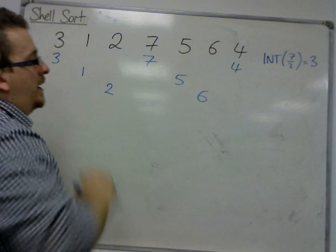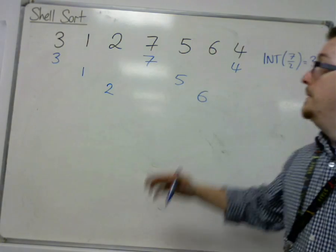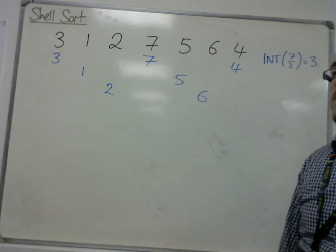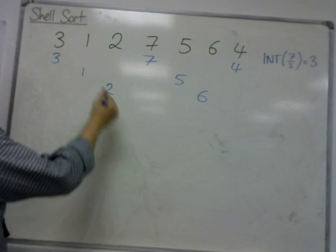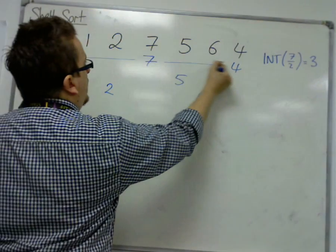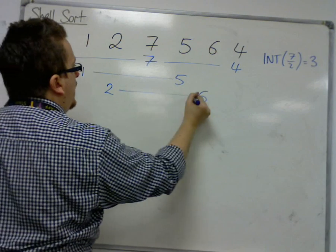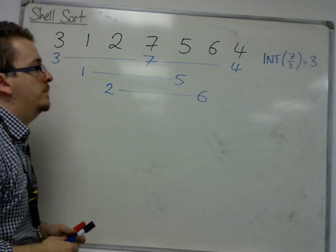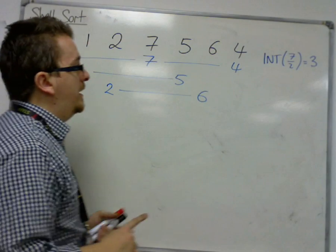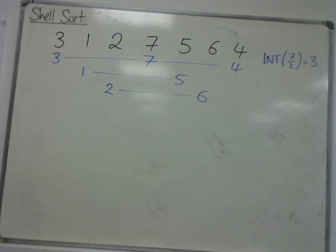So you can see that in this case, the 4 up here is left alone, but not left alone in the sense that we ignore it, because this is a sublist, this is a sublist, and that's a sublist. So this is an unusual case for this example, but I'm just showing you exactly how it would work.